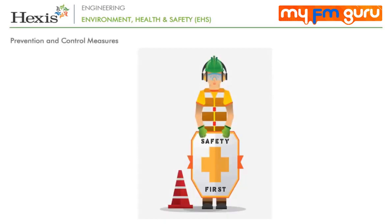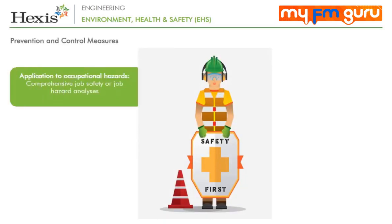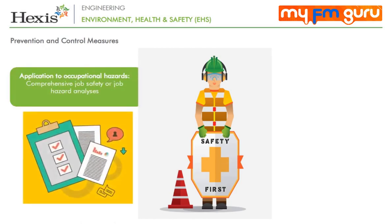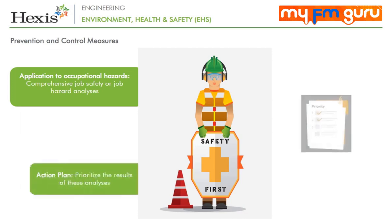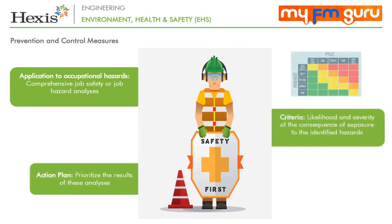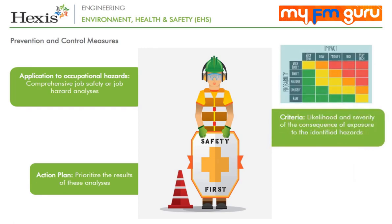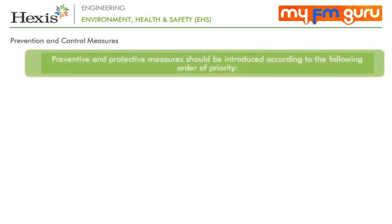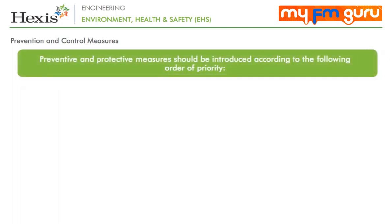Prevention and Control Measures play an important role in organizations. The application of prevention and control measures to occupational hazards should be based on comprehensive Job Safety or Job Hazard Analysis. The results should be prioritized as part of an Action Plan based on the likelihood and severity of the consequence of exposure to identified hazards. Preventive and protective measures should be introduced according to the following order of priority.